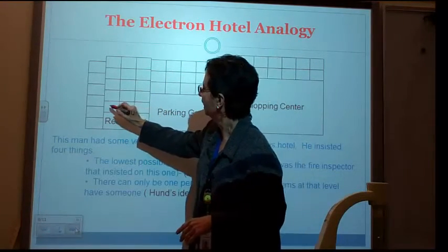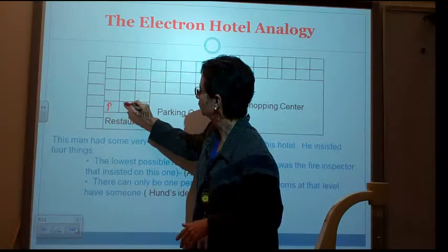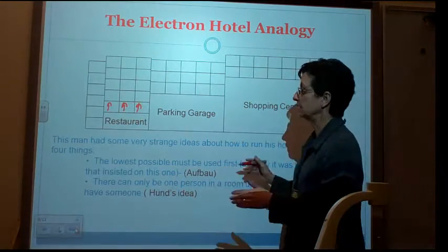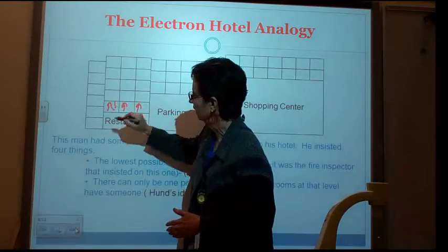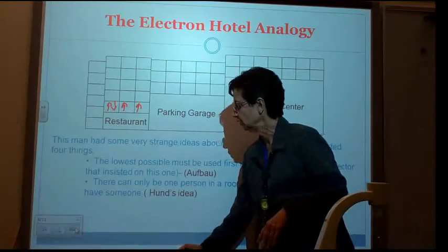He puts one person here, okay, and we're going to represent it one person here, and then one person here. And then eventually comes back and fills in the rest of the people, or the rest of the electron people.